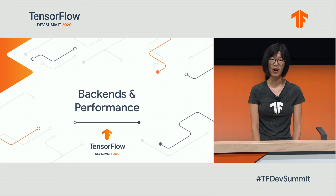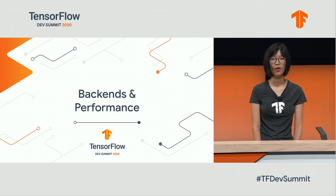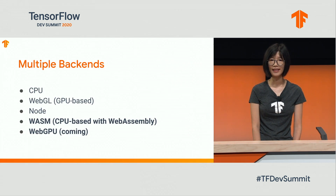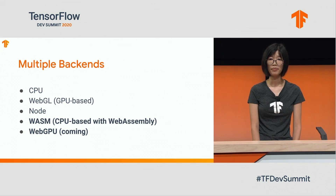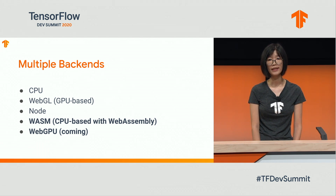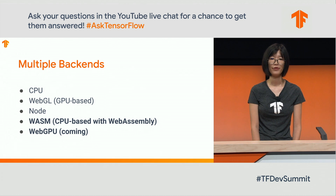It won't be possible to support ML models to run on devices of all kinds of capabilities without the various backends TensorFlow.js provides. We currently have four backends: a CPU backend that is always available for all devices, a WebGL backend that is the fastest by running models on GPU, a Node backend that runs models on desktops, servers, and IoT devices, and a new fourth backend — Wasm — which allows C++ code to run in the browser. We also invest heavily in future technology: a WebGPU backend will be coming soon, and we expect even better performance than WebGL.